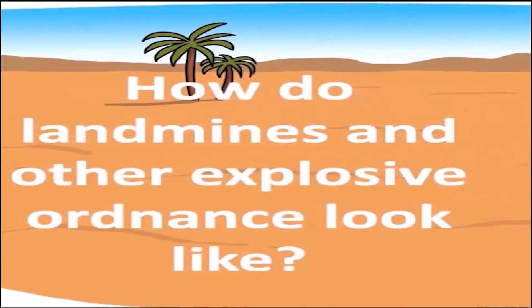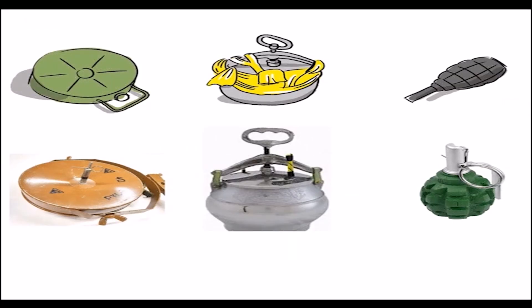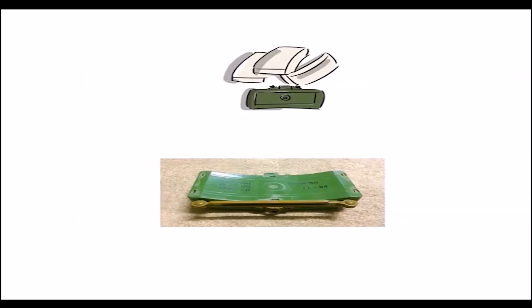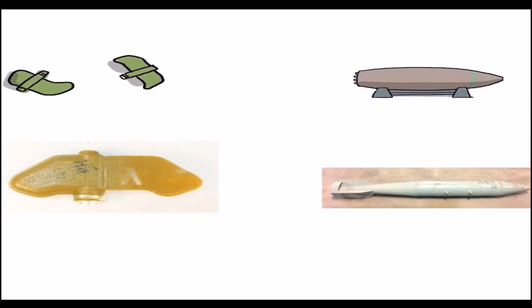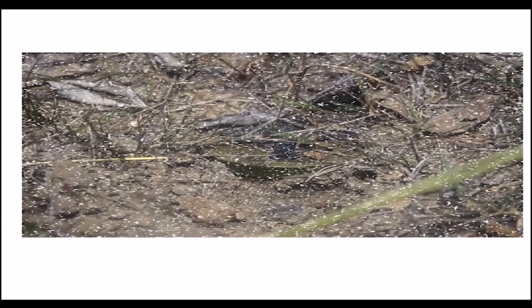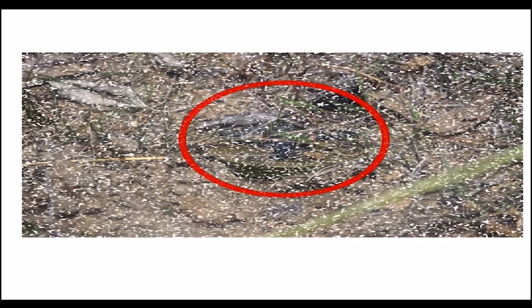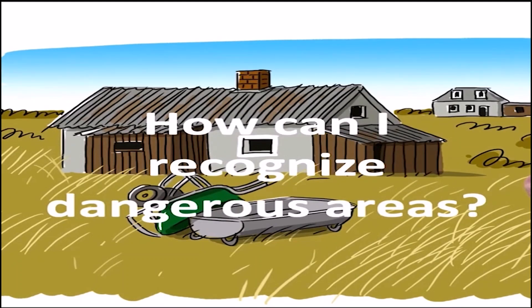How do landmines and other explosive ordnance work? Landmines and other explosive ordnance can have different shapes and colors. They can be round, oval, square, rectangular, or cylindrical. They are often dropped by airplanes and helicopters, or shot by vehicles or soldiers, and are often hidden under the soil or other materials. Always be careful and avoid areas where fighting took place, because landmines and weapons are very dangerous.